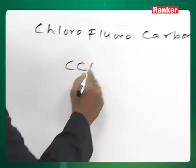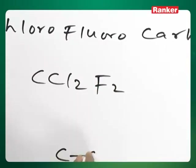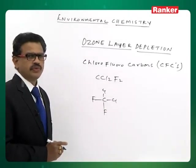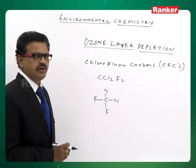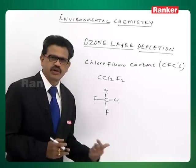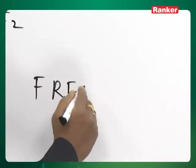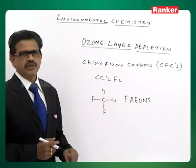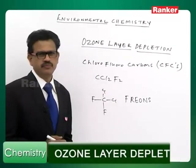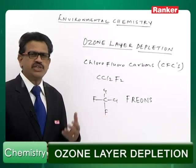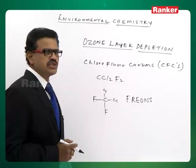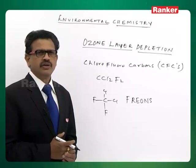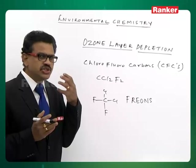Let's see examples of CFCs: CCl₂F₂ — dichlorodifluoromethane, the IUPAC name — commonly we call them freons. These freons are easy to prepare, cheaper, and highly stable, so they are widely used in refrigeration processes. These chlorofluorocarbons, when they enter into the stratosphere, attack the ozone molecules.